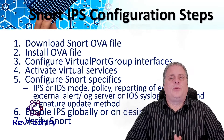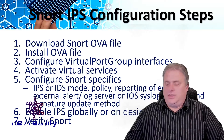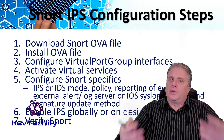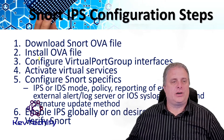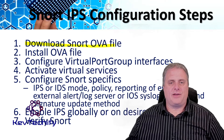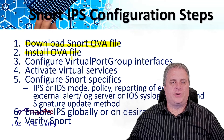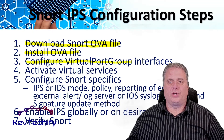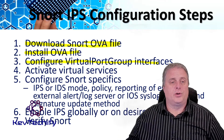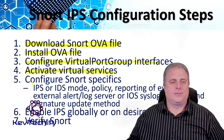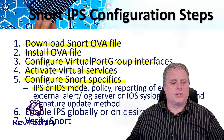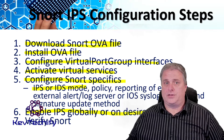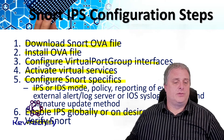To deploy SNORT IPS on supported devices, there are seven steps you have to follow. This is a summary of these steps that I'll go into more detail on in the following slides. Step one: download your OVA file — that virtual machine file. Step two: install that virtual machine. Step three: configure virtual port group interfaces, because SNORT needs two virtual port groups. Step four: activate virtual services. Step five: configure SNORT in either IPS or IDS mode. Step six: enable IPS globally or on the interfaces. Step seven: verify SNORT.